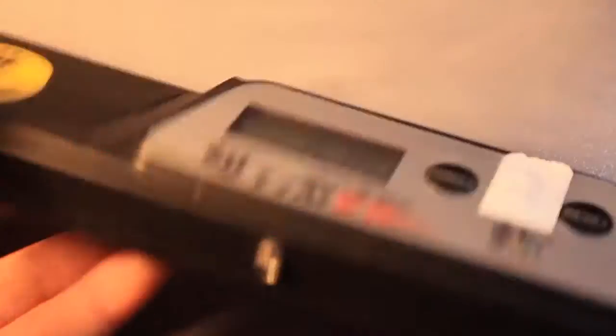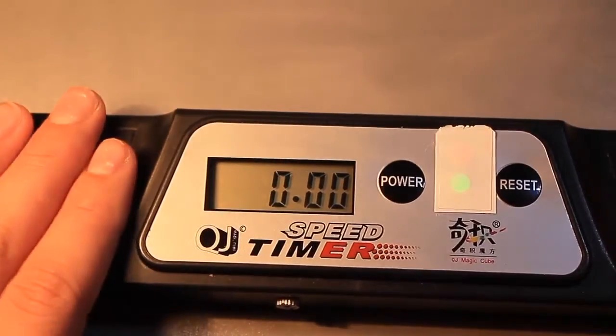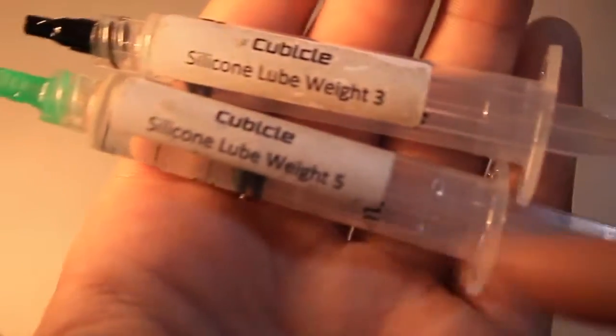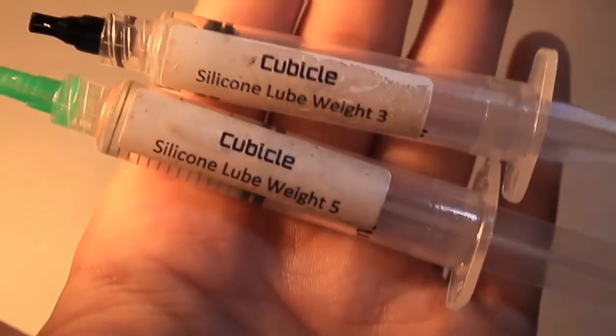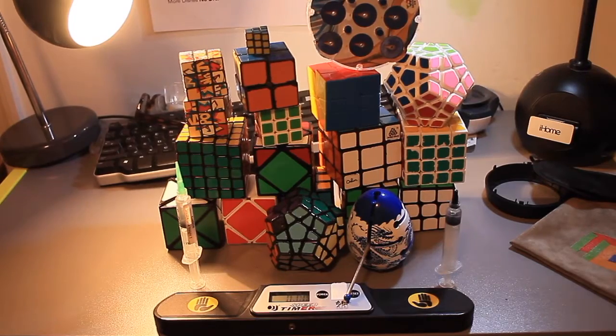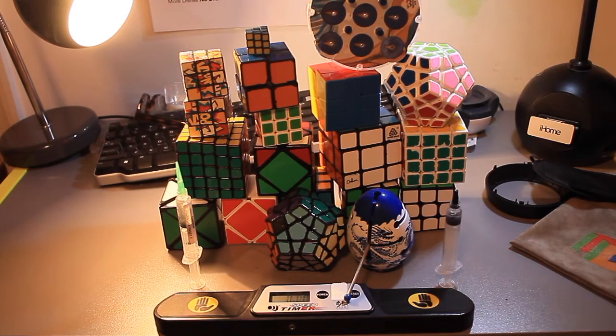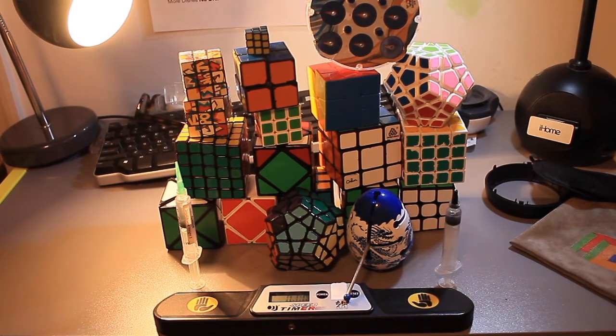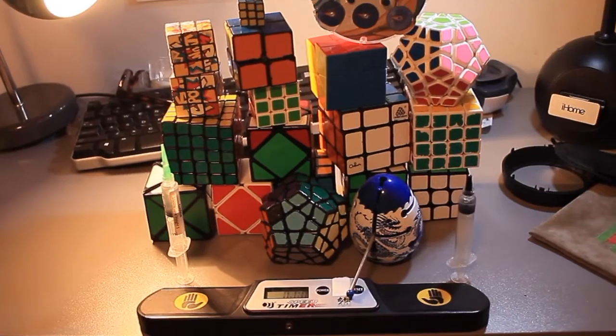The timer I use is a QJ and it's not that good. And the lubes I use are Weight Free and Weight Five Silicone Lube from the Cubicle. So far, my entire cube collection consists of 21 cubes. And hopefully, I'll be able to double it by next year. Thanks so much for watching, guys. And see you in 2017.